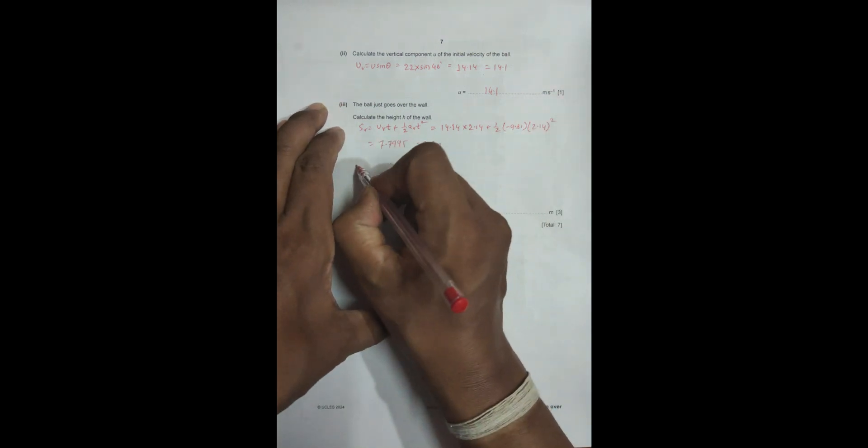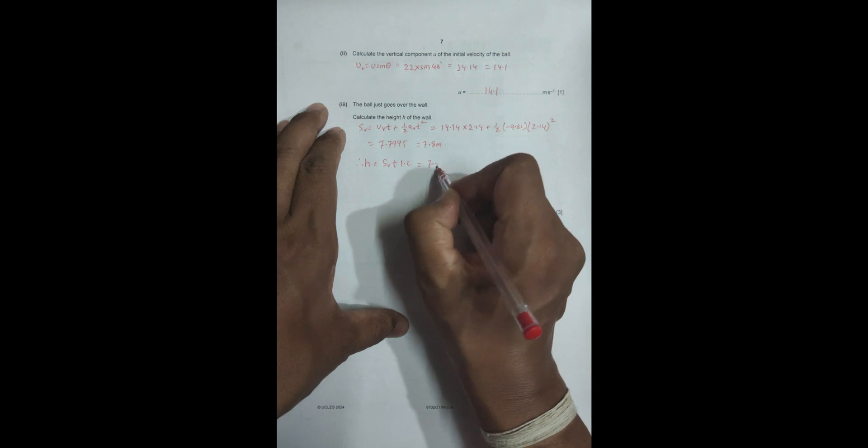Now this h should be equal to 7.8 plus 1.2. Therefore, h is equal to s_v plus 1.2, equal to 7.8 plus 1.2, equal to 9.0 meters. So this is the answer for this question. The wall is 9.0 meters high.